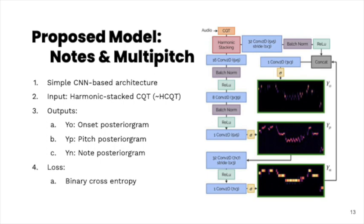After a small series of convolutions, the model outputs a first posteriogram YP, which has a frequency resolution of three bins per semitone, capturing finer-grained pitch information. This posteriogram acts as a bottleneck layer, and after another small convolution stack, the model outputs YN, a note-activation posteriogram with one bin per semitone. Finally, given YN and a latent representation of the input audio, the model outputs YO, an onset activation posteriogram also with one bin per semitone.